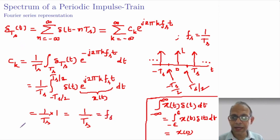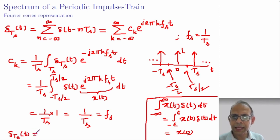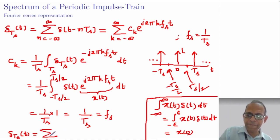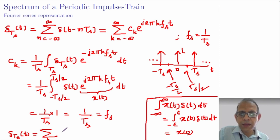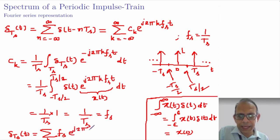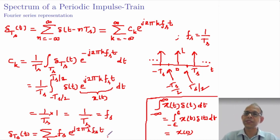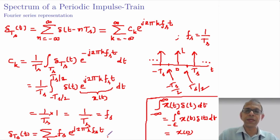Thus, the Fourier series coefficients for the impulse train are all equal to 1/Ts, which equals Fs. We can therefore write δ_Ts(t) as its Fourier series representation. This is the Fourier series representation of the impulse train. From here, we can obtain the Fourier transform representation.